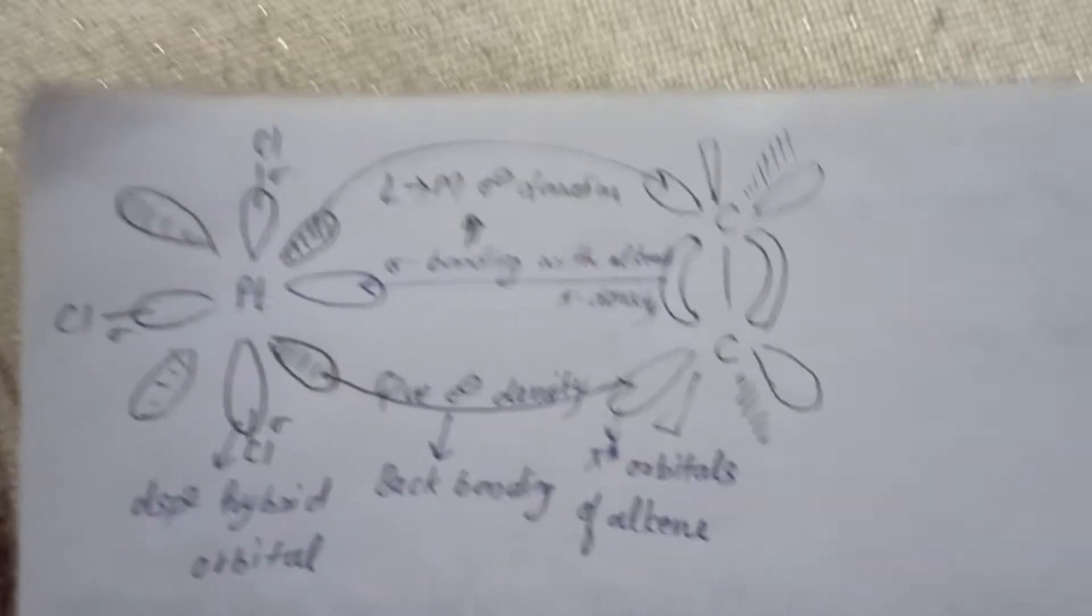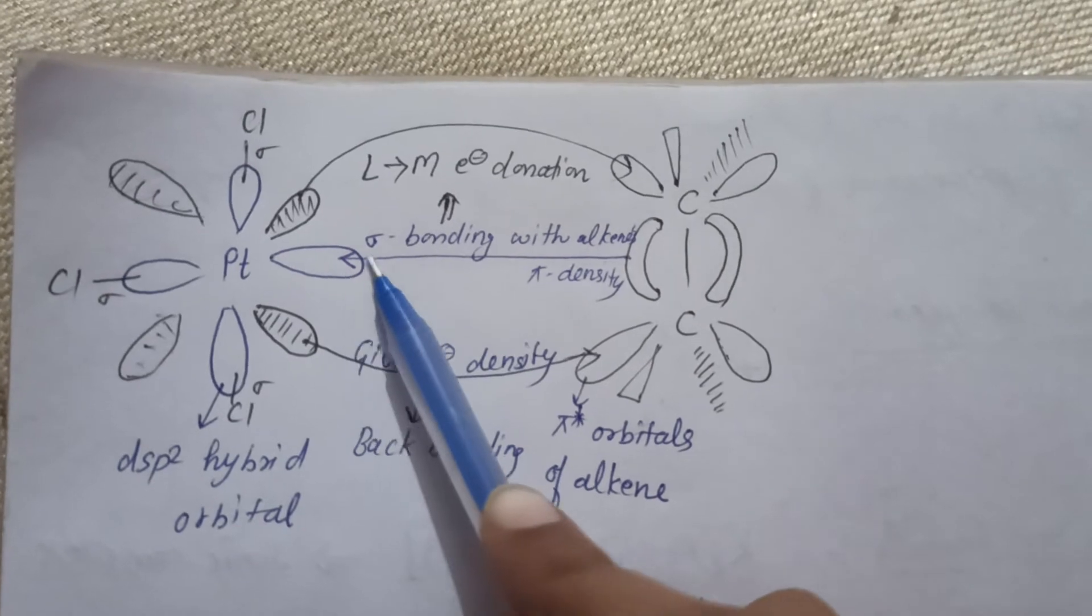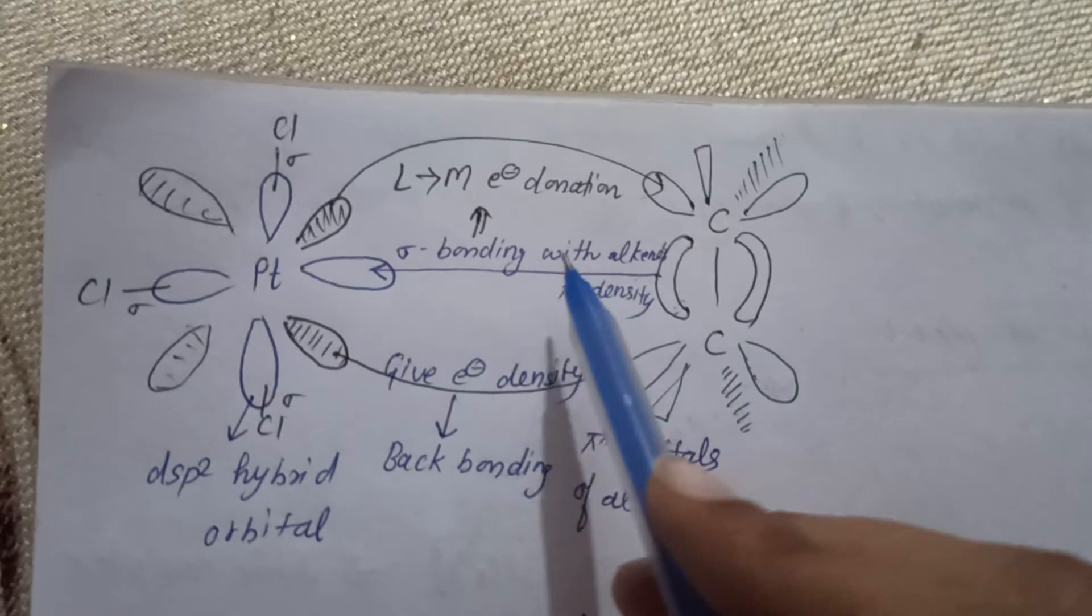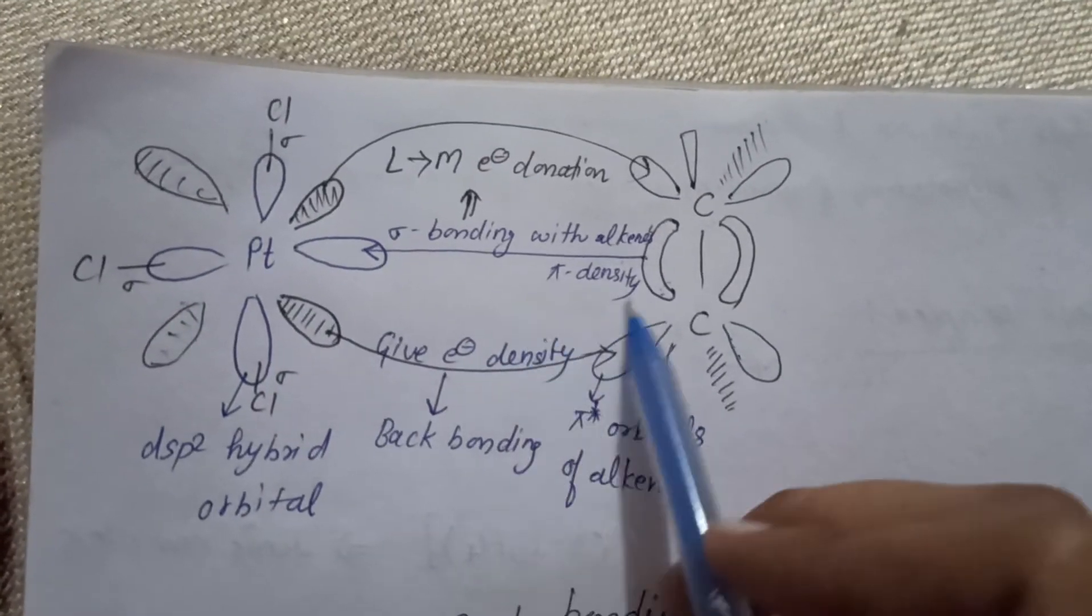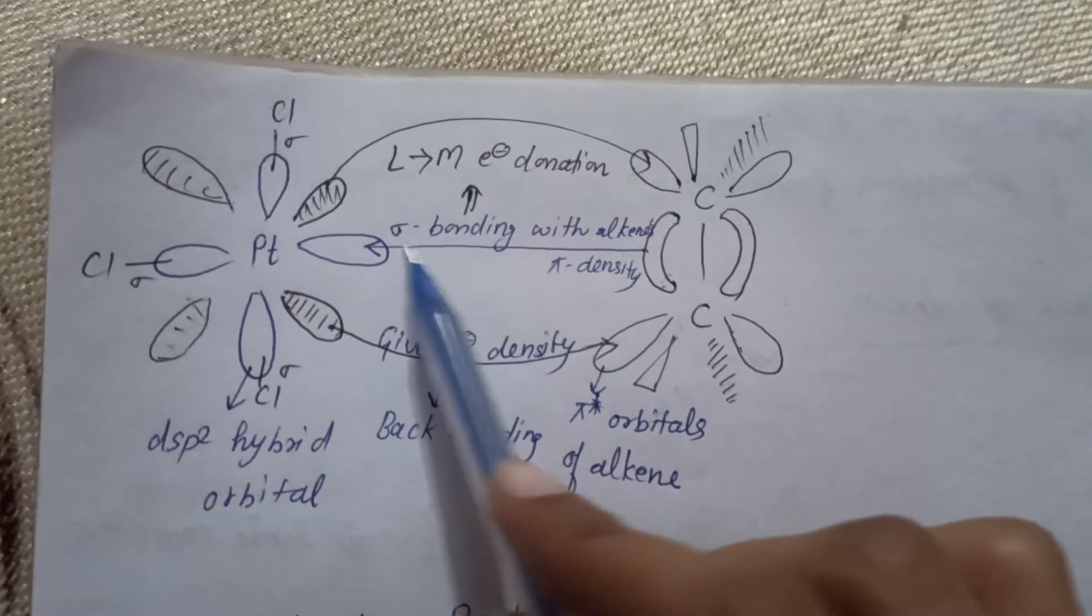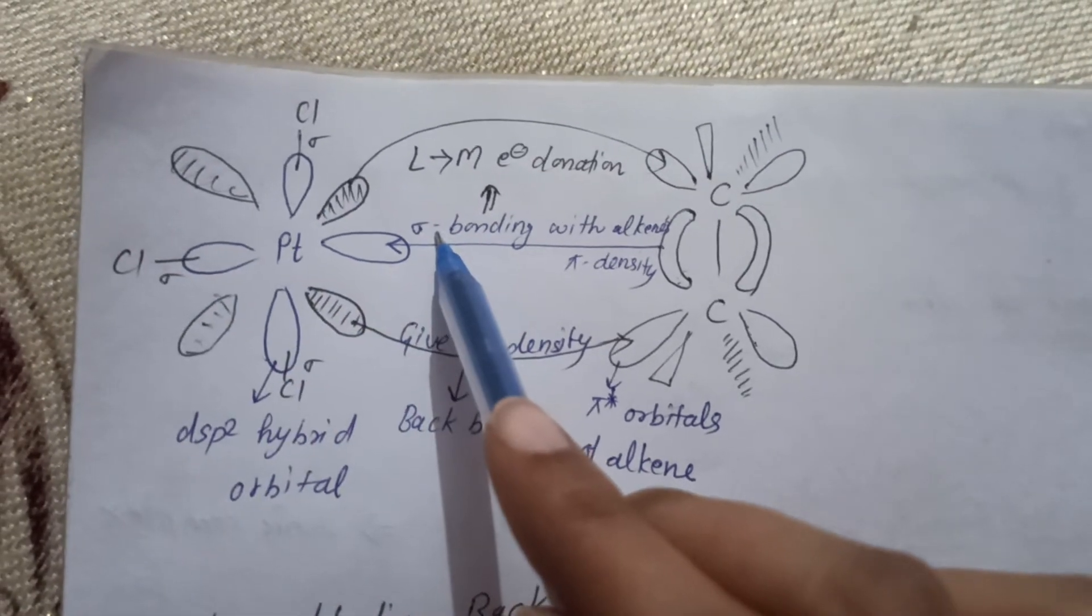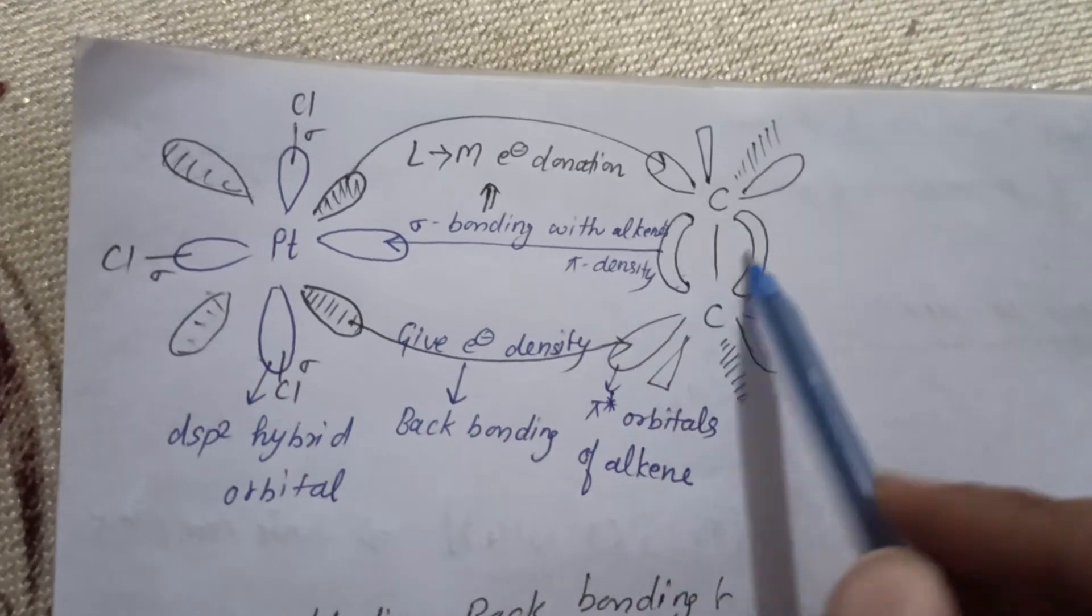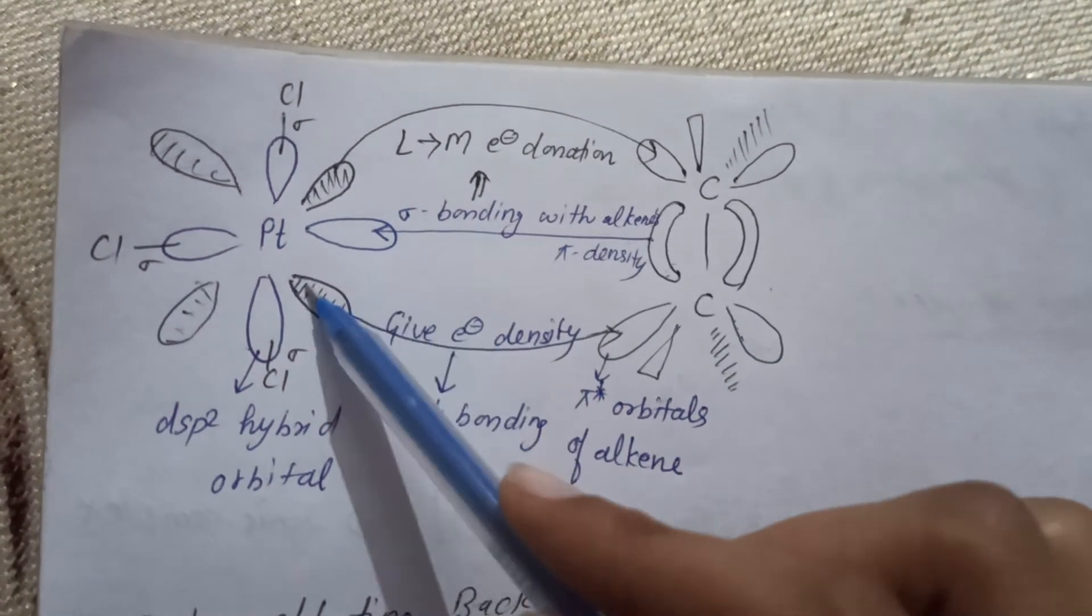Now, this is the complete diagram. This is why you can see sigma bonding with alkyne. So this is pi density, this means that the ligand C2H4 is donating the pi electron density to the metal. And what we're doing here? We're also making sigma bond. So we have hybrid orbitals. We have 3 sigma bonds with chlorine and 1 sigma bond with alkyne.